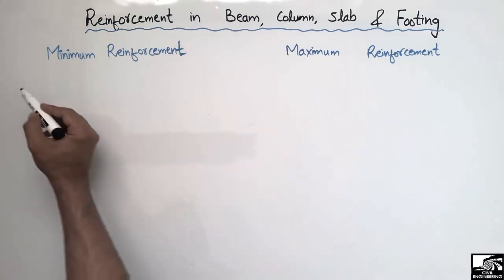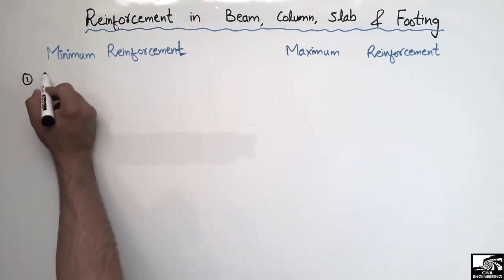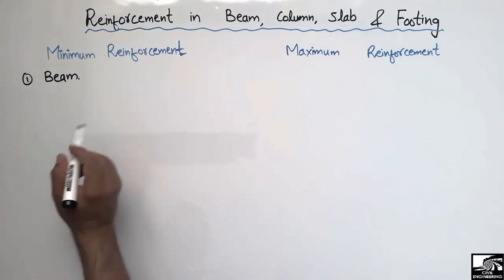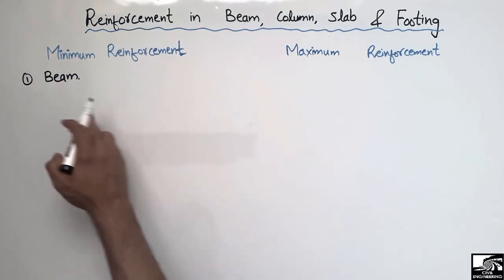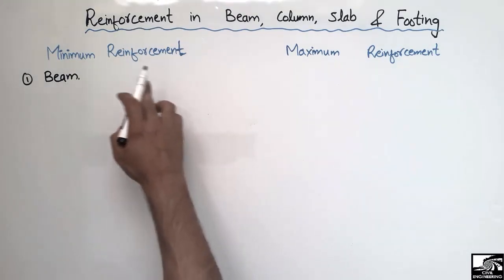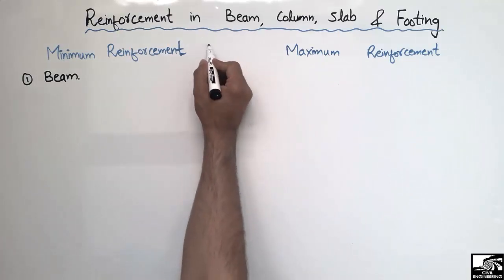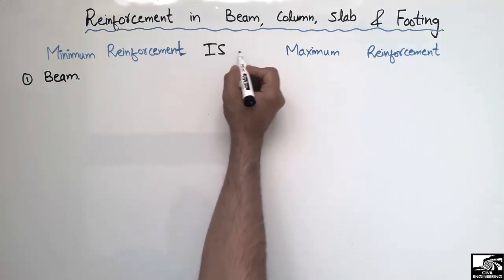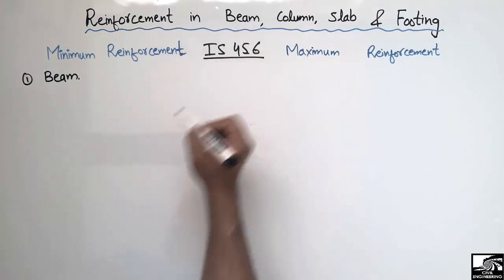We are going to start with the beam. The first structural member is the beam — what should be the minimum and maximum reinforcement requirement for the beam. These minimum and maximum reinforcement requirements are according to Indian Standard IS 456, the code of India.